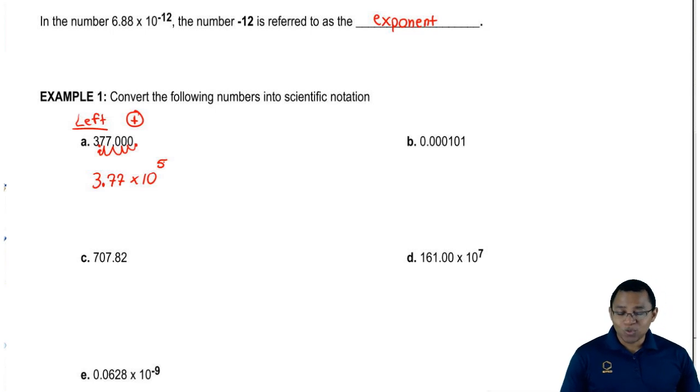Let's take a look at the next one. In the next one, I have 0.000101. Again, we need our coefficient to be between 1 and 10. We want the decimal to land between this 1 and this 0.